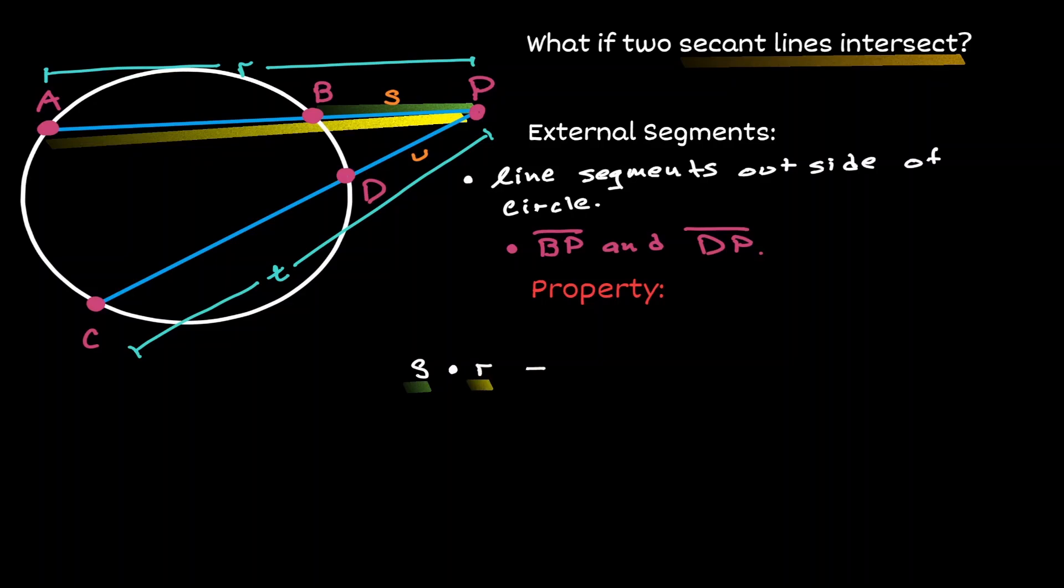That is going to be equivalent to the external line of the other secant, which is U, times the length of the secant line it belongs to, which we're calling T. This product rule will always be true.